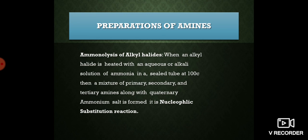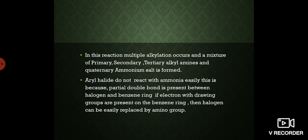Now we go to the preparation of amines. The first method is ammonolysis of alkyl halides. When alkyl halide is heated with aqueous or alkali solution of ammonia in a sealed tube at 100°C, a mixture of primary, secondary, and tertiary amines along with quaternary ammonium salts is formed. This is a nucleophilic substitution reaction where multiple alkylation occurs. Aryl halides do not react with ammonia easily due to partial double bond character between halogen and the benzene ring.